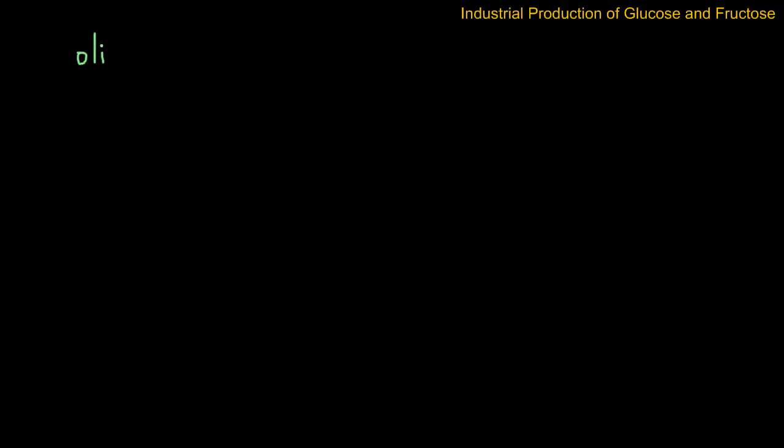In this video I'm going to take a look at the second stage in the three-stage process of the industrial production of glucose and fructose from starch. In the first video we saw that alpha-amylase hydrolyzed starch, a lone polysaccharide, to oligosaccharides. Oligo means 'a few', so these are chains of a few sugars or a few glucose units.